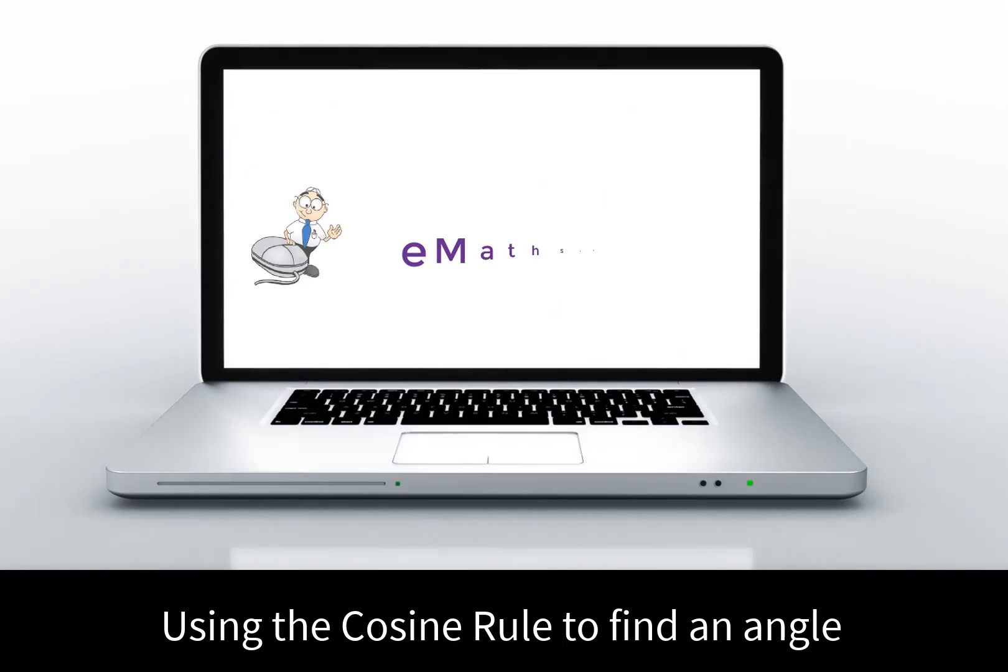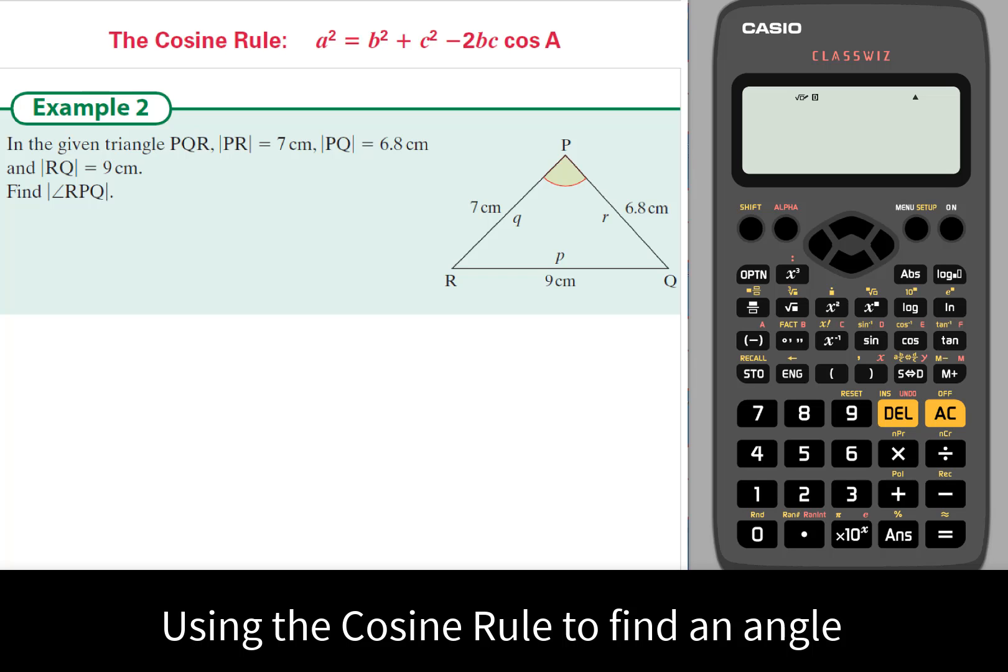Using the cosine rule to find an angle, this is a Leaving Certificate Higher Level mathematics question. In a given triangle, we know three sides: 7, 9, and 6.8 cm, and we're asked to find the angle at P.